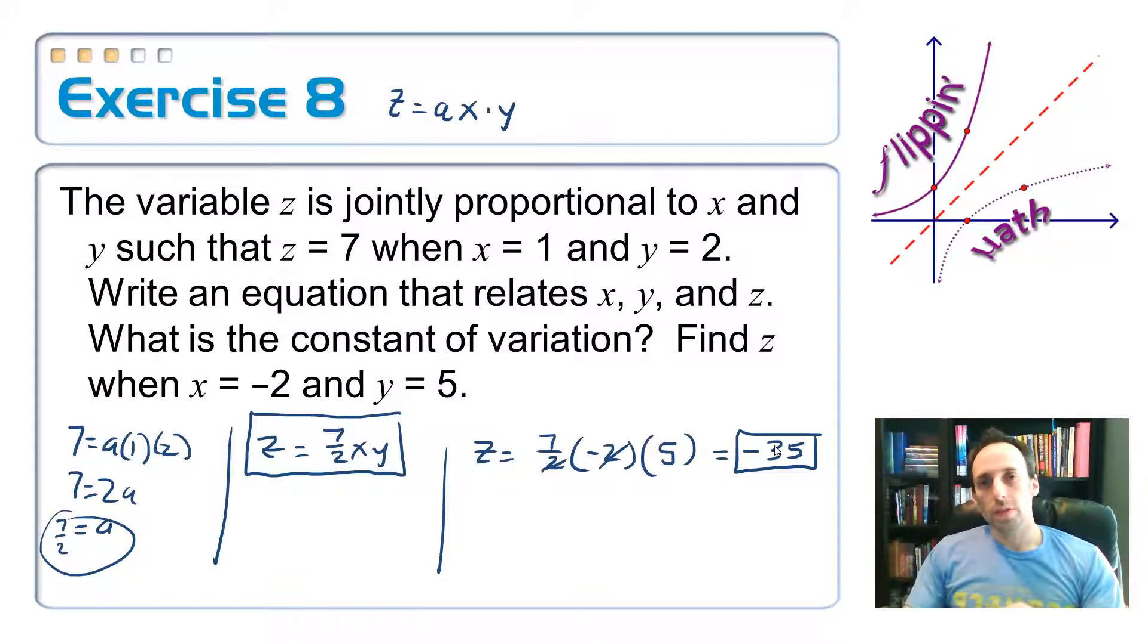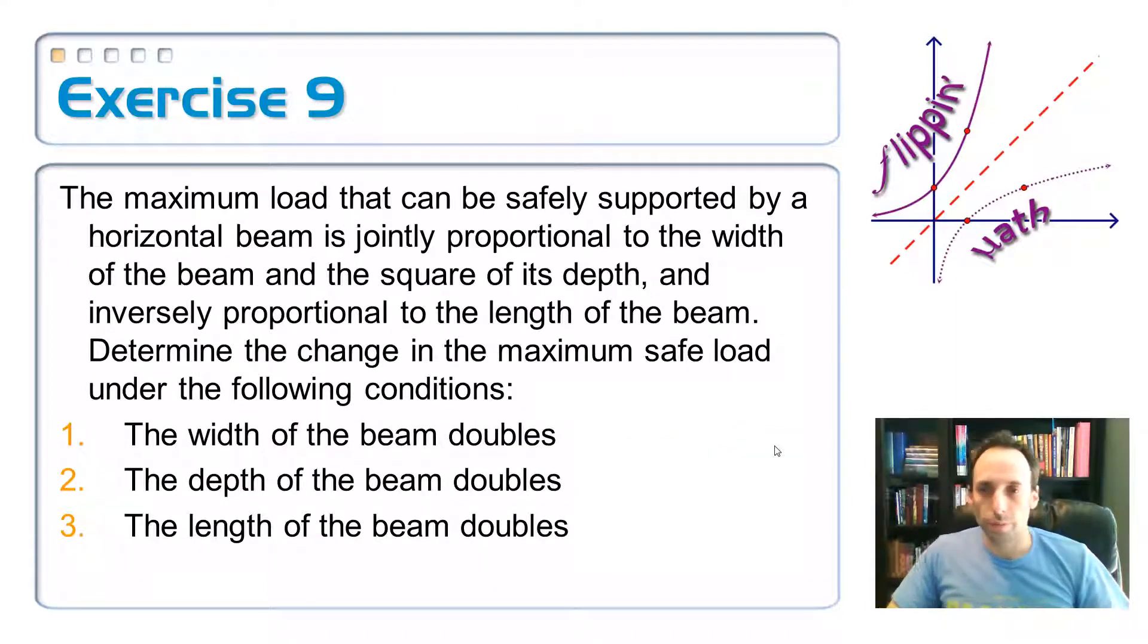Now on the previous examples, we were looking at a table of values. When it was direct variation, if we divided the numbers, we always got the constant of variation. And inverse variation, if we multiplied the two numbers together, we got the constant of variation. Now there isn't one really for joint variation because now we've got a couple extra variables and things get a lot more complicated then. So we're not going to have a shortcut for us just looking at a table of values and seeing if it varied jointly or not.